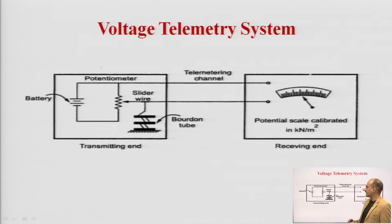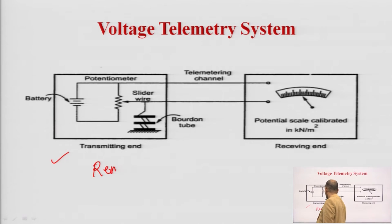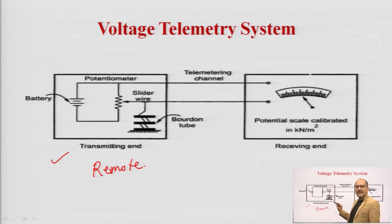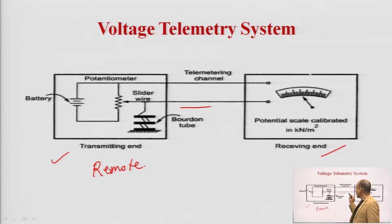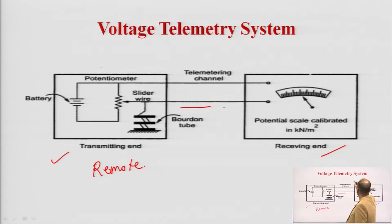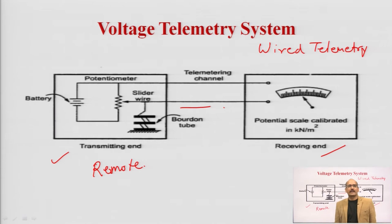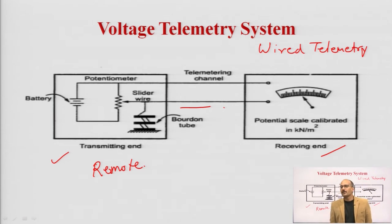Looking at the diagram, you can see the transmitting end is located at the remote location. At that remote location, the physical quantity is measured through this arrangement. At the receiving end, the complete signal is transmitted through connecting wires. This makes it clear that in the voltage telemetry system, you are using a wired telemetry system. Therefore, the voltage telemetry system — being an electrical telemetry system — is also a wired telemetry system and cannot be used for long distances.